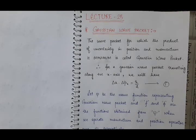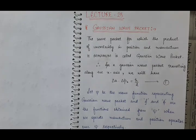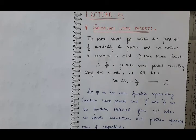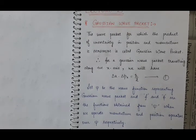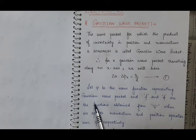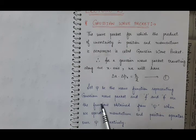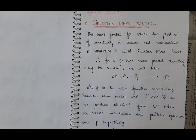So, now we will derive the wave function for this Gaussian wave packet. Because the particle for which the wave packet is the Gaussian wave packet, there will be some wave function, and the wave function for Gaussian wave packet — what is its expression — we will derive that. Suppose psi be the wave function associated with the particle in motion whose wave packet is the Gaussian wave packet. To derive this expression of psi for Gaussian wave packet, we need some mathematical calculations.